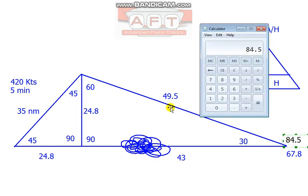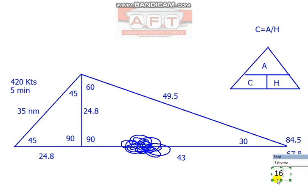That is then a difference of 84 and a half less than 67.8, the difference of 16.7 nautical miles. So that diversion has cost me 16.7 nautical miles, added 16.7 miles to my total flight distance.